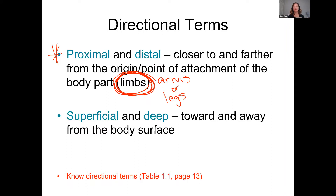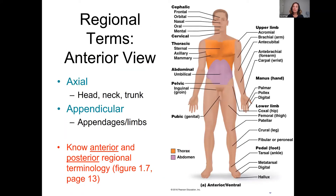The last directional terms are superficial and deep. Superficial means closer to the surface of the body; deep means more internal. I always think of wounds — a cat scratch would be a superficial wound, whereas a gunshot would be a deep wound. It's important that you know all these directional terms, and in your lab this week you'll identify them using images.